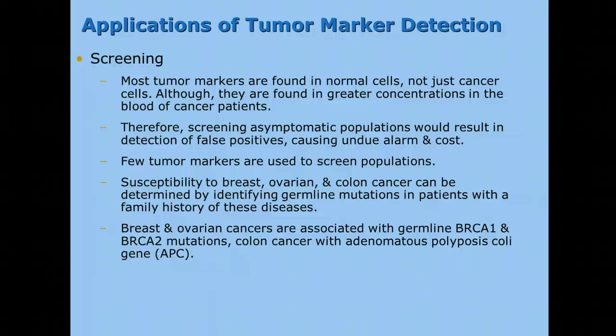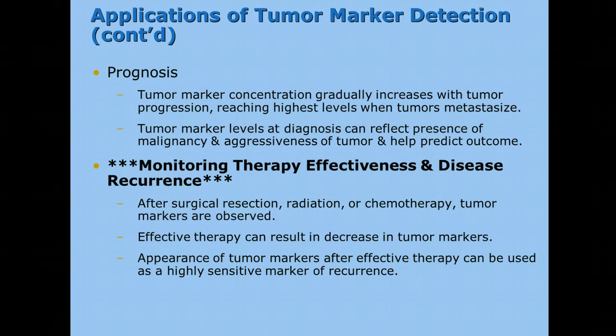Susceptibility to breast, ovarian, and colon cancer can be determined by germline mutations in a patient with a family history. Angelina Jolie started a big thing with BRCA1 and BRCA2 analysis for breast and ovarian cancer. A neighbor of mine just two weeks ago had a hysterectomy and double mastectomy in the same surgery at 37 years old — her BRCA2 analysis came up positive and she elected to have both surgeries, figuring she decreased her chance of getting cancer by 87%. If you have a family history, this type of blood draw may be worth considering, though it is very expensive.